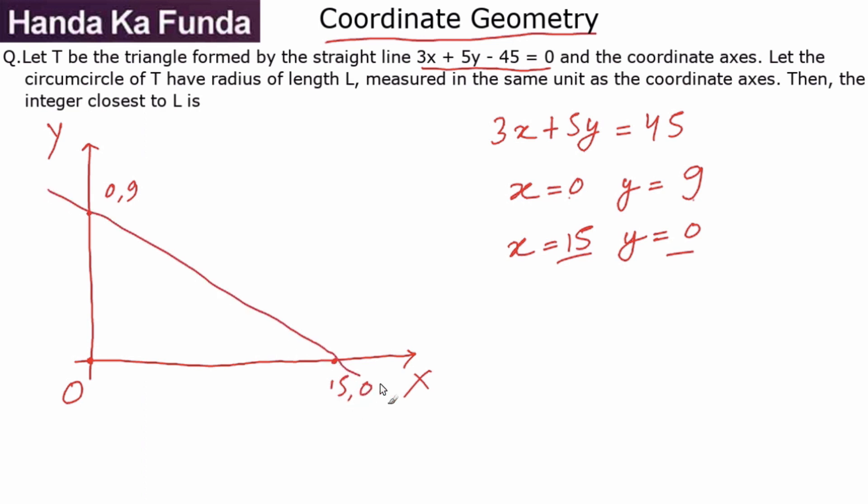So this is my line roughly, and OAB suppose this is the right angle triangle that we were looking for. Now we have obtained that OAB is my triangle, it is lying in the first quadrant.